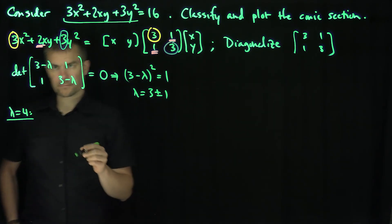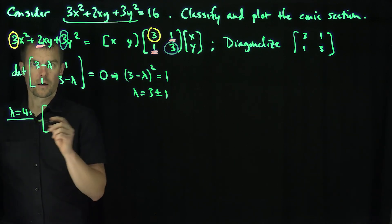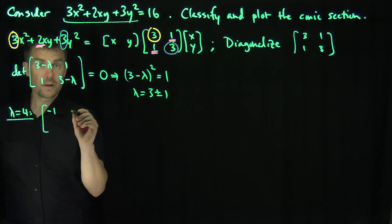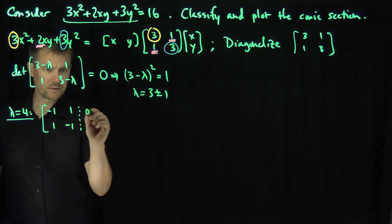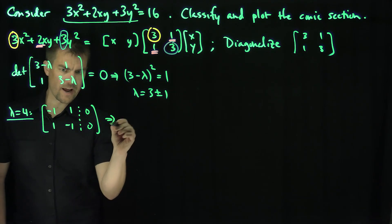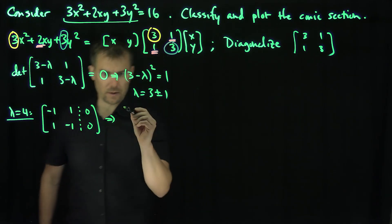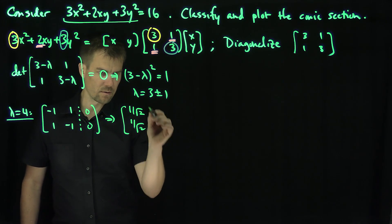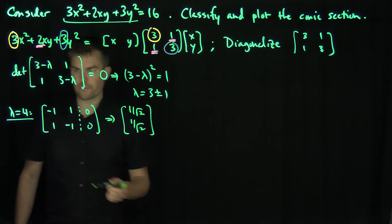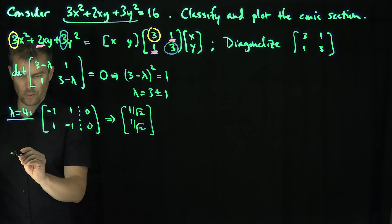When λ = 4, we're going to look at the augmented matrix [-1, 1; 1, -1 | 0, 0]. We can generate an eigenvector from this. I'm going to normalize it immediately because I know from the theory of symmetric matrices that they're going to have orthogonal eigenvectors. That's my eigenvector for λ = 4.